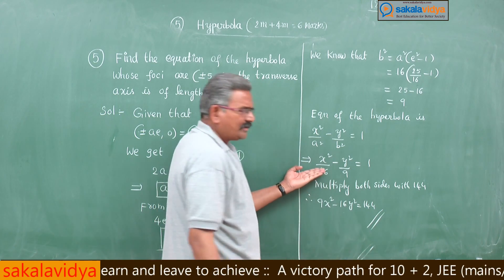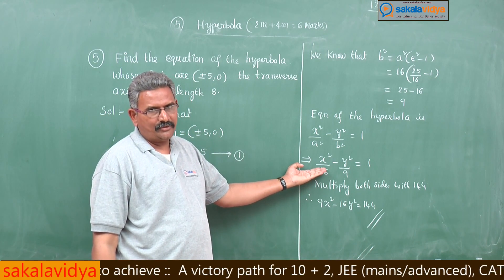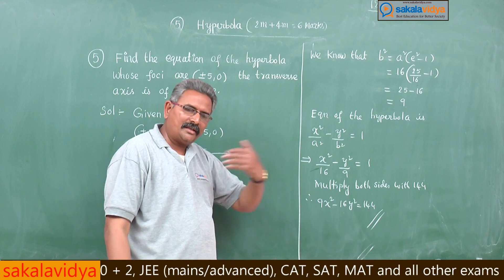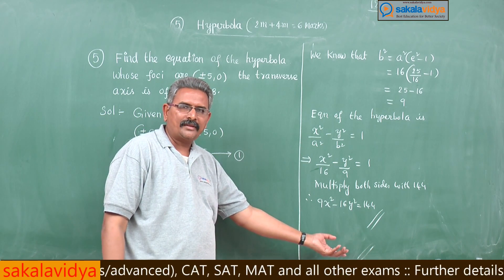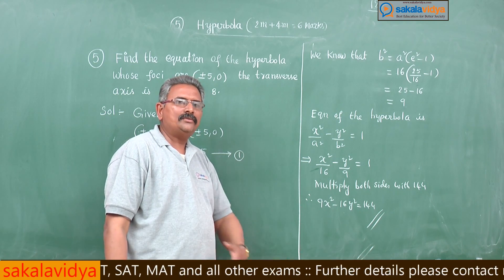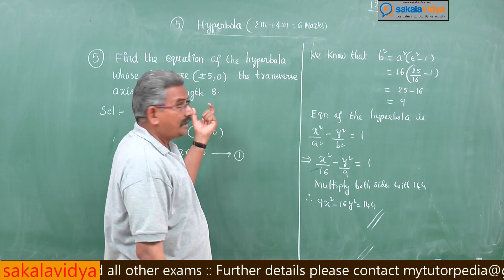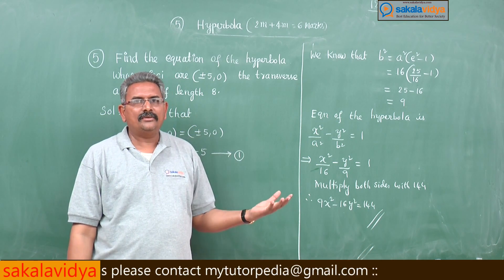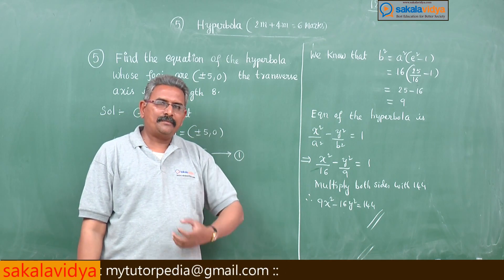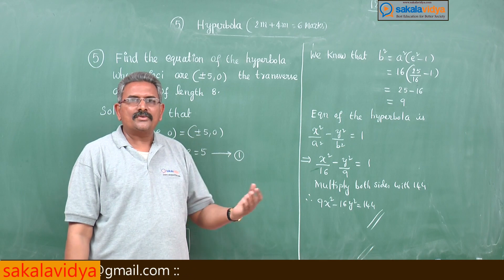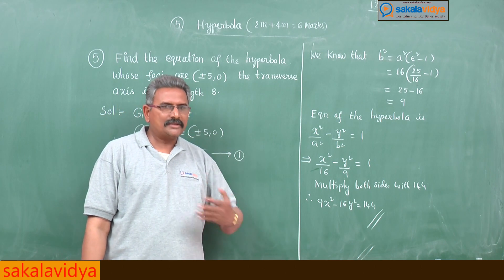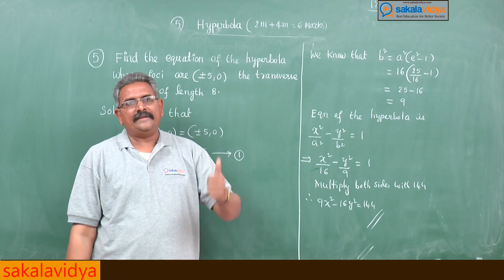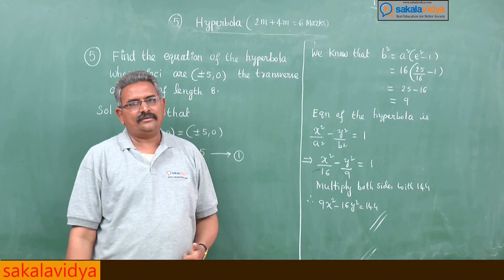Up to the step x²/16 − y²/9 = 1 is also acceptable as the final answer; further simplification is optional. The hyperbola chapter has been completed. I request you all to go through other problems to score more in your final examination. Thank you all.